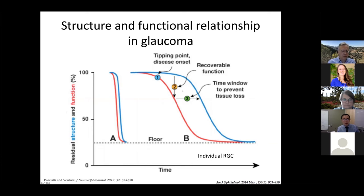There's a particular timeframe where we can probably intervene to prevent the ganglion cells from dying. This is illustrated as the window of recoverable function. In patients who have stunted RGC function, you can lower intraocular pressure and that can sometimes bring back visual field function.